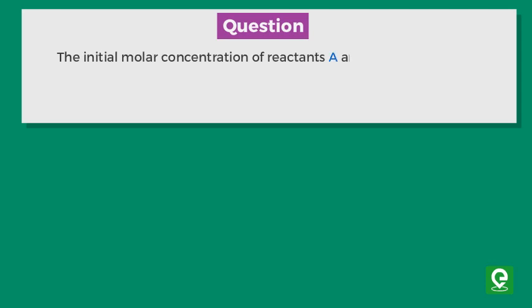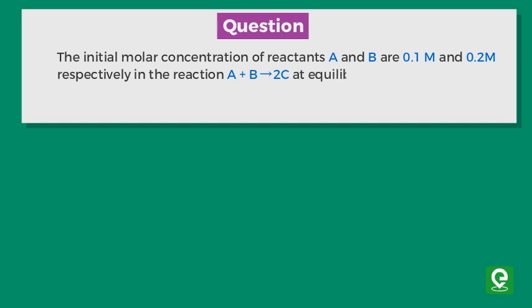Question: The initial molar concentration of reactants A and B are 0.1 M and 0.2 M respectively in the reaction A plus B gives 2C. At equilibrium, the concentration of A in the mixture was found to be 0.06 M. Calculate the equilibrium constant.